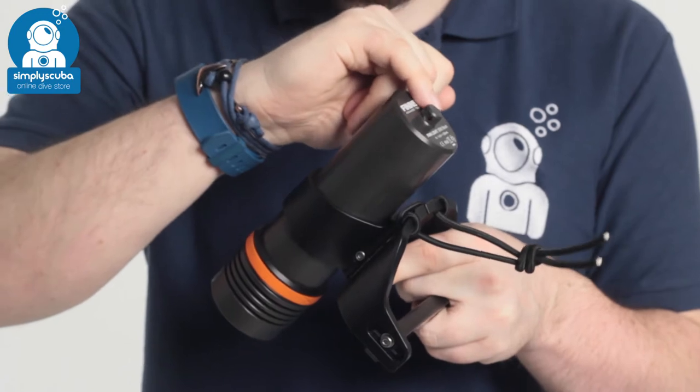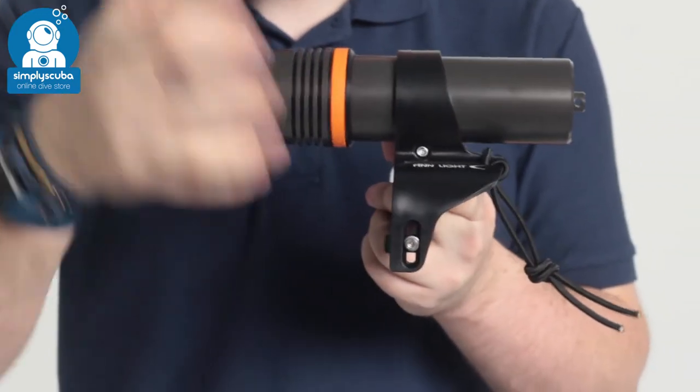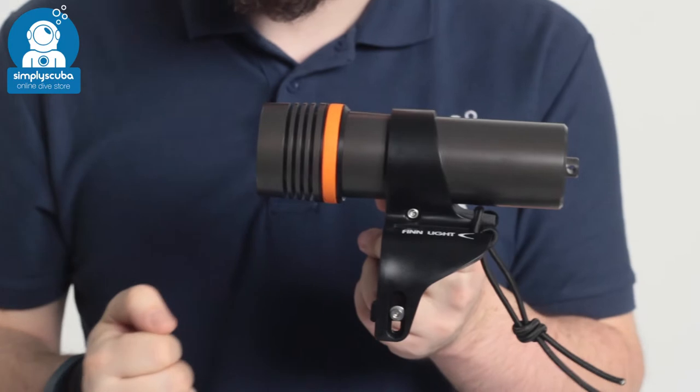You have an attachment loop at the bottom and you have a removable head, so you can take that off. That's how you charge the torch.